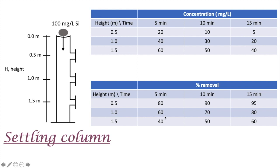At the next point, the concentration is 40 milligram per liter, meaning 60 percent has been removed. At 1.5 meters and five minutes, 60 milligram per liter is detected, so 40 percent has been removed. You can fill out all the percentage removal values by doing these simple calculations.